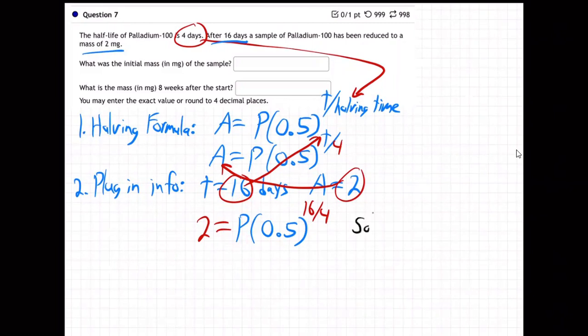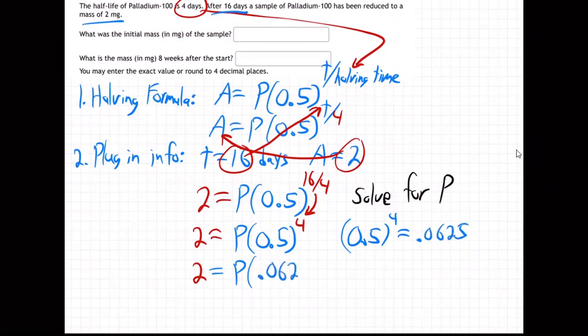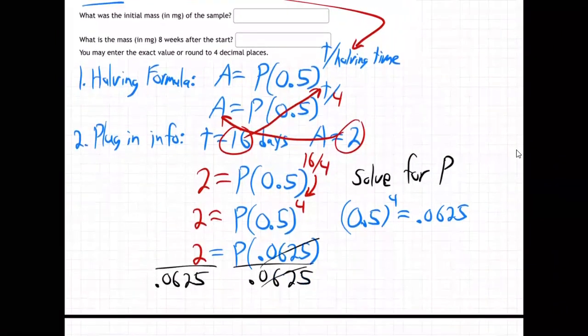Solve for P. This is 2 equals P times 0.5 to the fourth power. 16 divided by 4 is 4. If you take 0.5 to the fourth power you get 0.0625. Divide by 0.0625 on both sides. P equals 2 divided by that, I got 32. We're able to solve for P, P is 32.